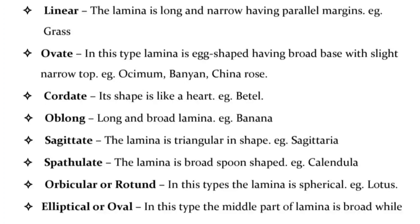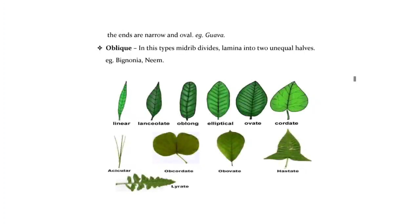Oblong — long and broad lamina, e.g., banana. Sagittate — the lamina is triangular in shape, e.g., Sagittaria. Spathulate — the lamina is broad and spoon-shaped, e.g., Calendula. Orbicular or rotund — the lamina is spherical, e.g., lotus. Elliptical or oval — the middle part of lamina is broad while the ends are narrow and oval, e.g., guava. Oblique — the midrib divides the lamina into two unequal halves, e.g., Bignonia and neem.